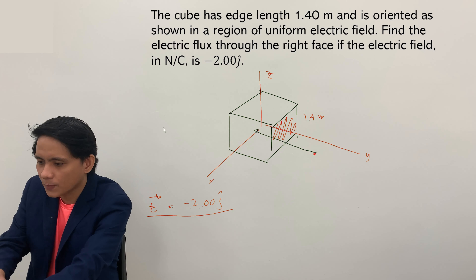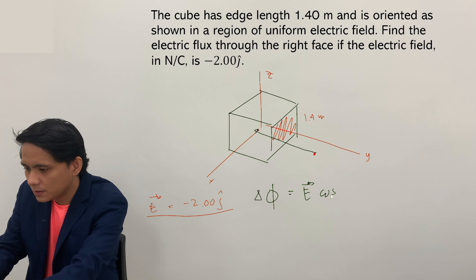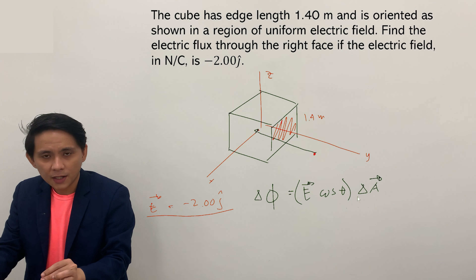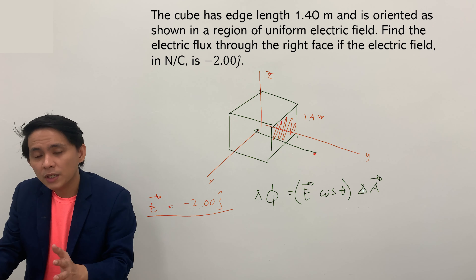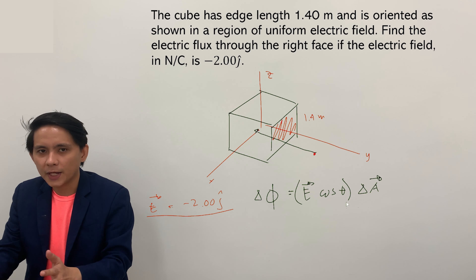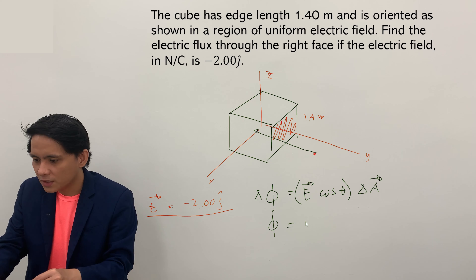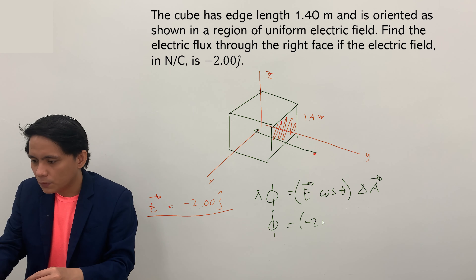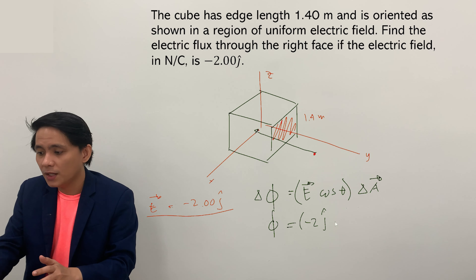Let's recall the formula for electric flux: delta phi is equivalent to the electric field times cosine theta multiplied by delta A. Since the area is given as a numeric value rather than a variable, we do not need to use the integral form. The total flux is equivalent to E, which has a magnitude of negative 2 in the j hat direction, times cosine theta. The angle here is 0, and cosine 0 equals 1.